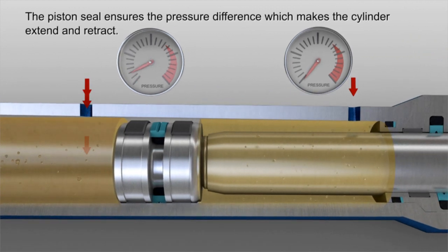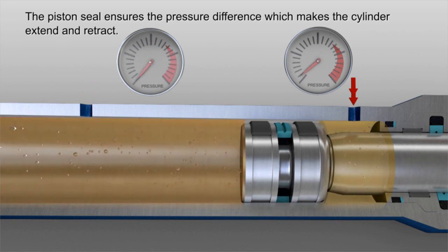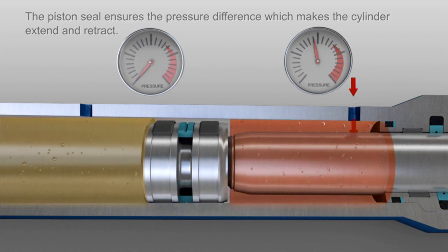The piston seal is a vital component within the cylinder. It seals the cylinder so that the pressure difference, which makes the cylinder extend and retract, is ensured.